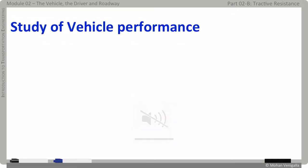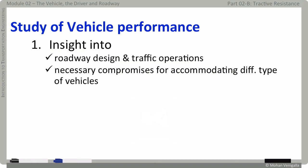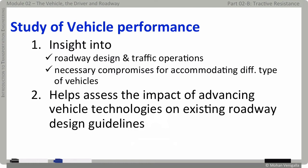Why is it important to study vehicle factors in highway design? It serves two important purposes. First, it provides insight into roadway design and traffic operations, and the compromises necessary to accommodate the wide variety of vehicles that use roads — trucks, cars, and so on. Second, it forms a basis on which to assess the impact of advancing vehicle technologies on existing roadway design guidelines.